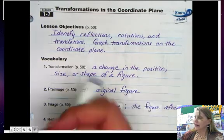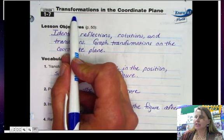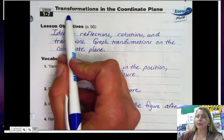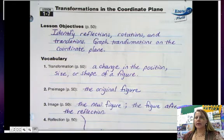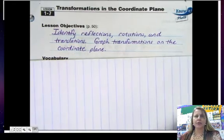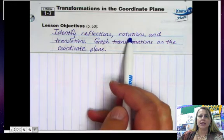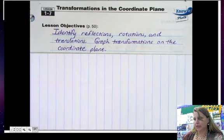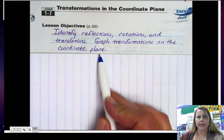Hello again. Today we are going to go over 1.7 transformations in the coordinate plane. So if you don't have your notebook out, go ahead and pull it out. Our objective for today is to identify reflections, rotations, and translations, and we're also going to graph transformations on the coordinate plane.